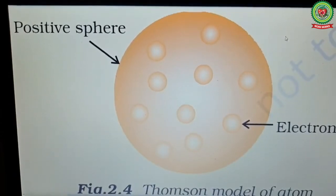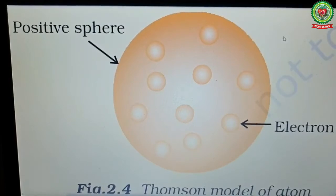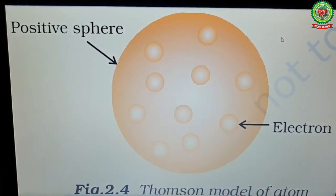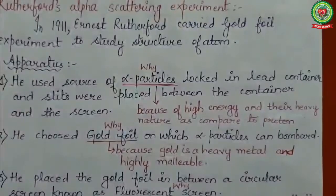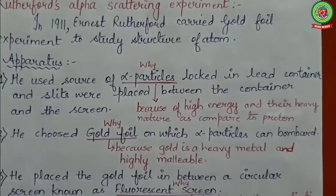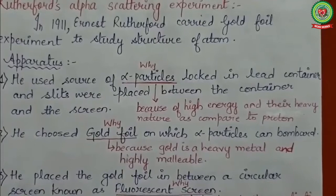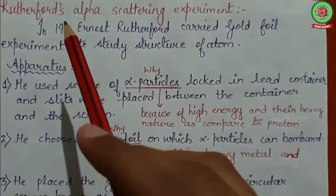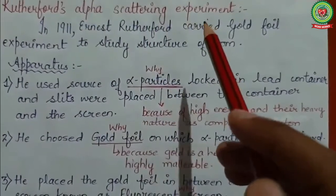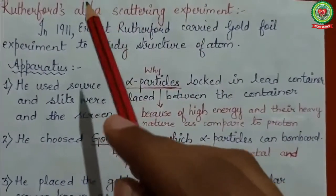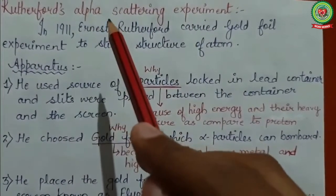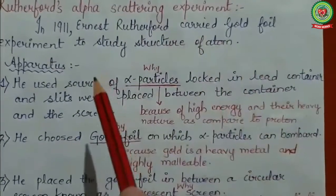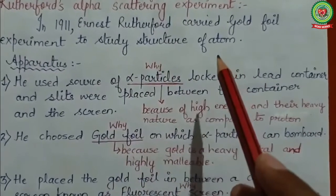Thomson's model was proposed to explain the arrangement of electrons and protons, but there was no practical evidence for it, so many scientists contradicted it and there was a need for another model. The next scientist, after the failure of J.J. Thomson's model, was Rutherford, who gave the Rutherford alpha scattering experiment — called so because he used alpha particles.